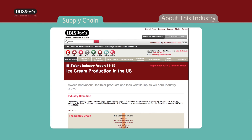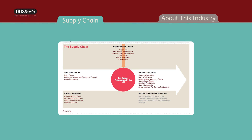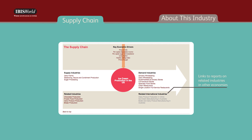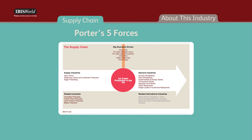The section also provides an understanding of the products or services that are included or excluded in the industry operations. The About This Industry chapter also provides a visual overview of the supply chain with links to the actual reports for upstream suppliers, downstream buyers, and related industries. Additionally, it provides links to detailed business environment reports for the key external drivers that affect the industry's performance.